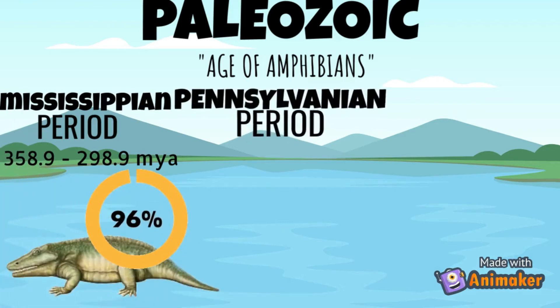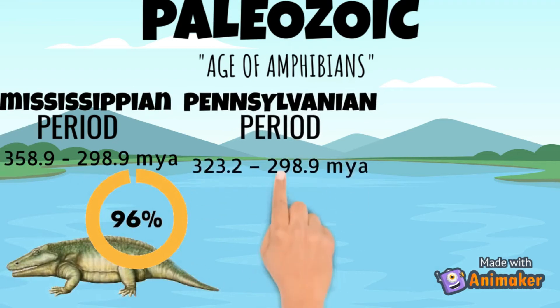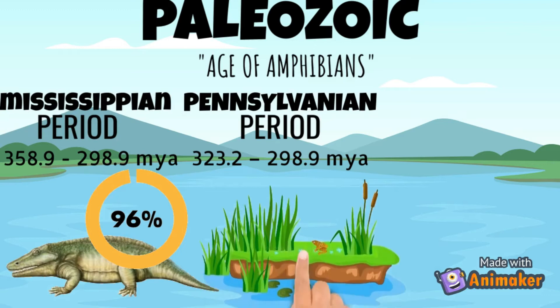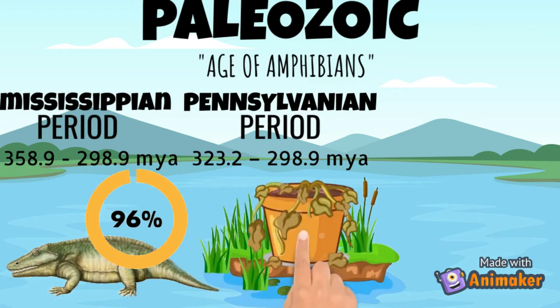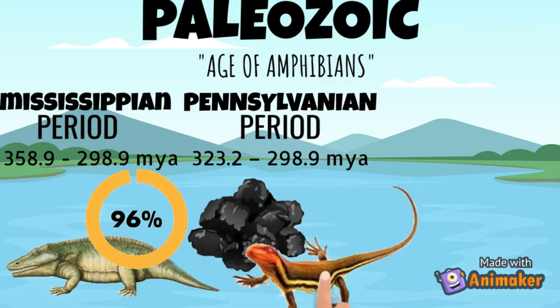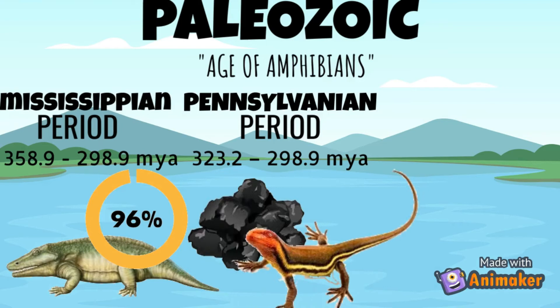The next is the Pennsylvanian period, which was 323.2 to 298.9 million years ago. In this period, widespread swamps laid down thick bits of dead plant material that today constitute most of the world's coal. Hylenomusa is a reptile that lived during this period but became extinct in this period.